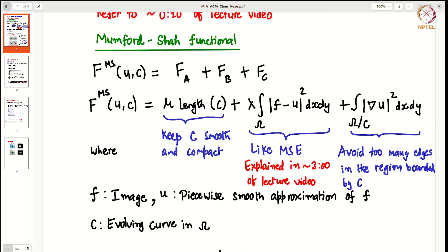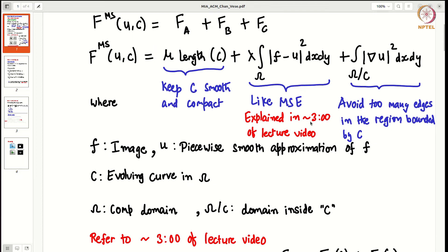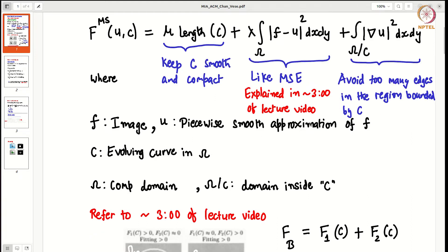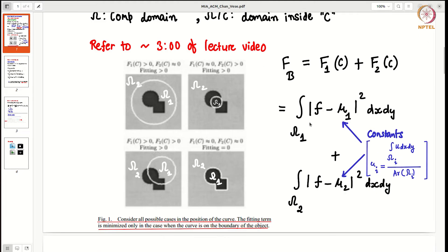The second term FB is the main term. It looks like a mean square error between the original image and its piecewise smooth approximation. Sir has explained this in this timestamp, almost 3 minutes in the lecture video. You can refer to the video.